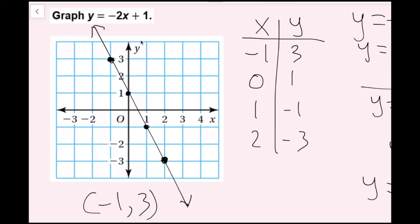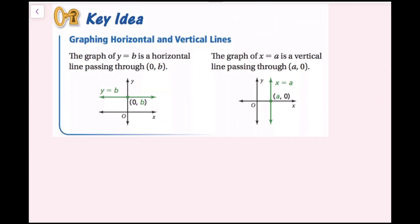I just picked those x values randomly — you can pick any x values you want, but I'd recommend picking values that are on your given graph. Now we're going to talk about graphing horizontal and vertical lines. The graph of y equals b is a horizontal line passing through the point 0 comma b. The graph of x equals a is a vertical line passing through the point a comma 0. We'll talk about why that is in the next example.